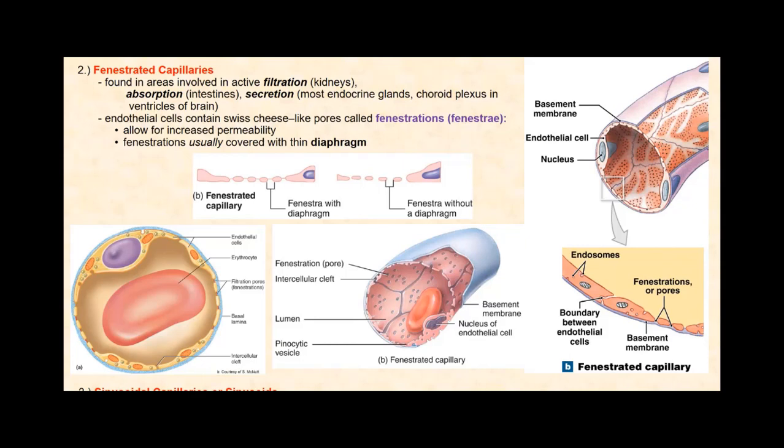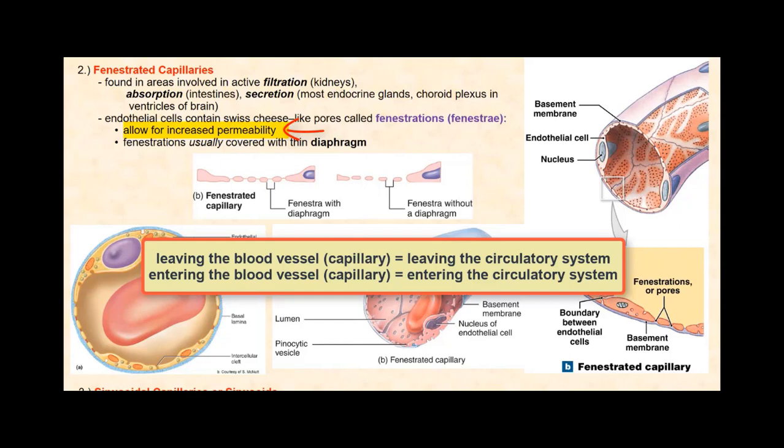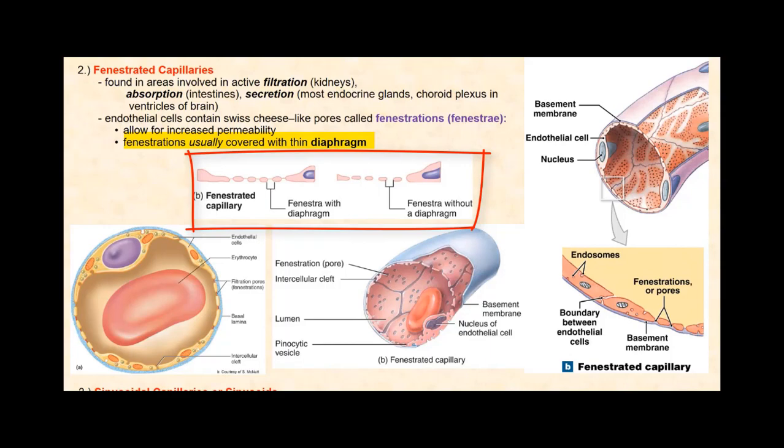If we have two slices of Swiss cheese laid side by side, the gap between the slices is the intercellular cleft. The purpose of these fenestrations is to allow for increased permeability, meaning that larger-sized substances that would not normally pass through the narrow intercellular clefts are able to pass through these wider fenestrations, giving these substances the ability to either leave or enter the blood vessel. Some fenestrations have a thin diaphragm, while others do not.